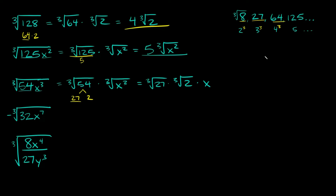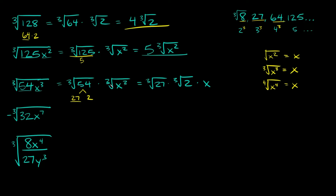Let me clarify that pattern. If you take the square root of x squared, that equals x. The cube root of x cubed equals just x. The fourth root of x to the fourth equals just x. And the fifth root of x to the fifth is just x. So the cube root of x cubed is equal to just x.